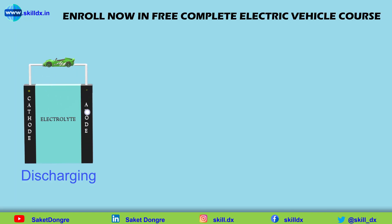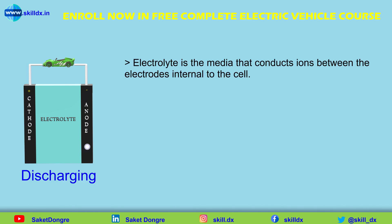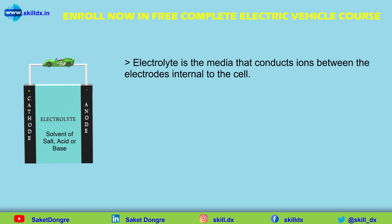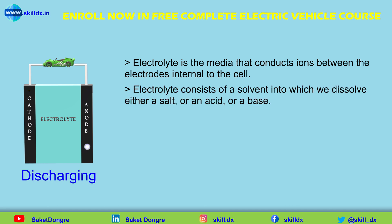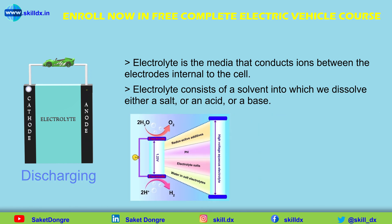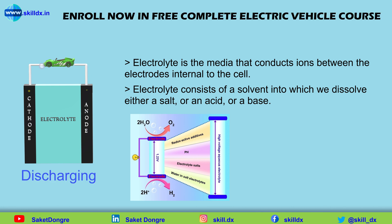Let's start with the electrolyte. The electrolyte is the media that conducts ions between the electrodes internal to the cell. In a general electrochemical cell, the electrolyte consists of a solvent into which we dissolve either a salt, an acid, or a base. Some battery cells use an electrolyte whose solvent is water — we call those aqueous cells. However, water dissociates into hydrogen gas and oxygen gas at a potential of around 2 volts.